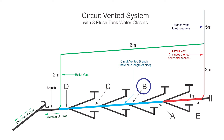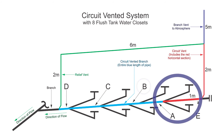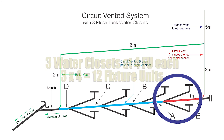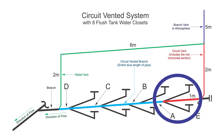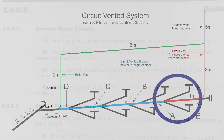Now let's look at pipe B. Pipe B is downstream of 3 water closets, so 3 times 4 is 12 fixture units. It still needs to be a minimum of 3 inches because of the size of the fixture outlet pipe for the water closet.